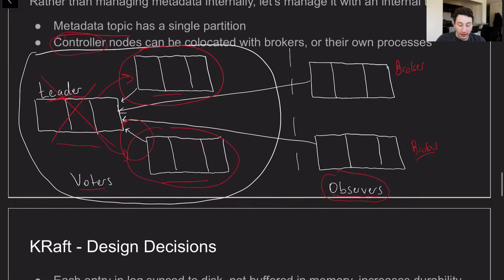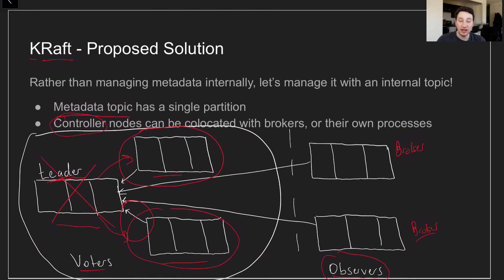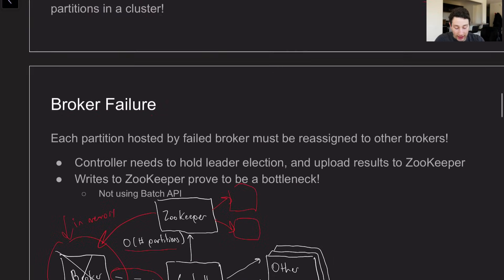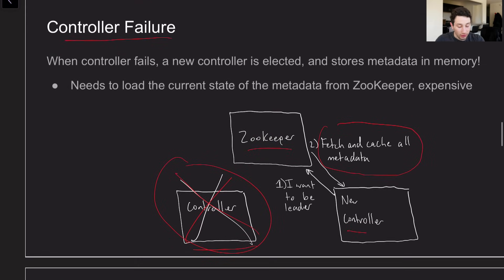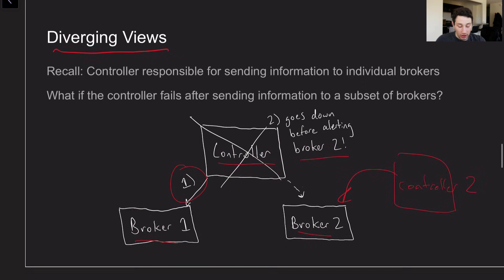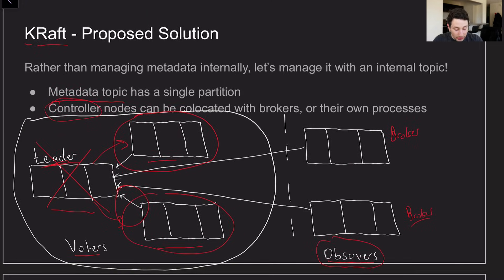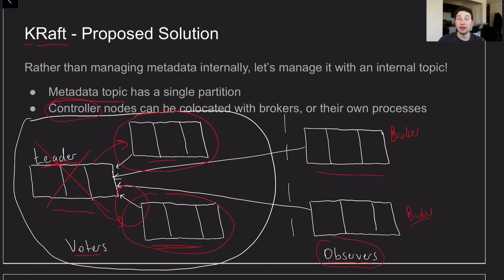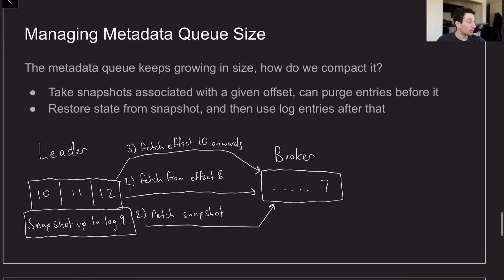Before moving on, I want to touch on one pretty central theme of this change that makes KRaft so efficient compared to the ZooKeeper approach. In both controller failure and broker failure scenarios, one common theme with ZooKeeper was that if something fails, you have to fetch and cache all of the metadata from ZooKeeper. In the KRaft proposed solution, every single node — whether it is a voting node or a broker node — is actually caching all of that information locally. So even though it may be slightly behind the leader, if it goes down and comes back up it will have the majority of the information already there, and the incremental amount it has to fetch to start running again is very small. This makes failovers extremely quick compared to ZooKeeper, which is the main impact of this change.